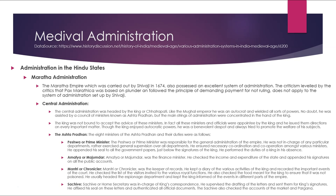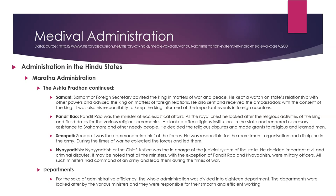The Sachiv or Home Secretary was in charge of the king's correspondence. He supervised the drafting of letters and sent them for the king's signature, affixed his seal and authenticated all official documents. He also checked accounts of markets and Parganas. The Samant or Foreign Secretary advised the king on matters of war and peace, kept watch on the state's relationships with other powers, sent and received ambassadors with the king's consent, and kept the king informed of important events in foreign countries.